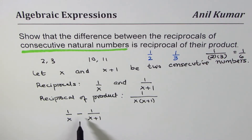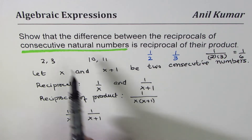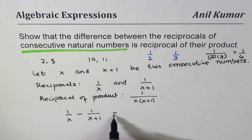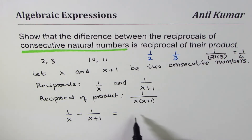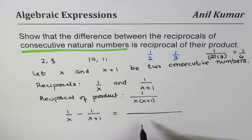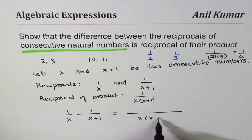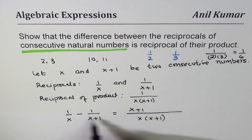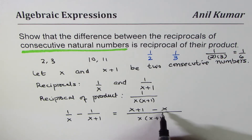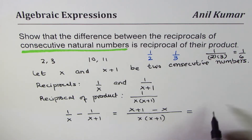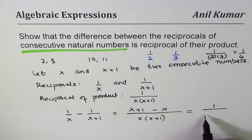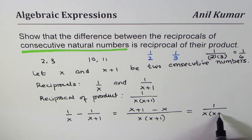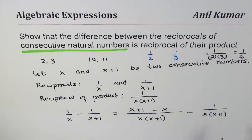Taking the common denominator X times X plus one and cross multiplying, we get one times X plus one, which is X plus one, minus X. Since X minus X is zero, we are left with one over X times X plus one.